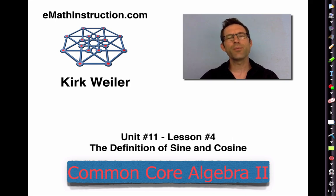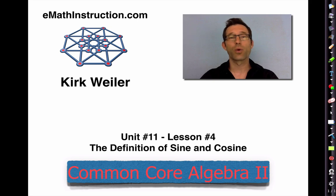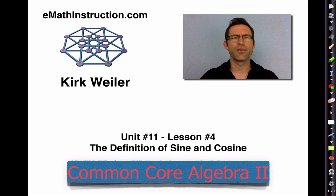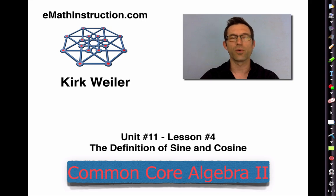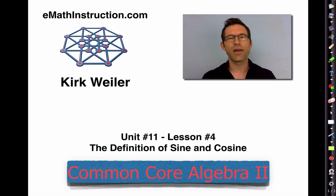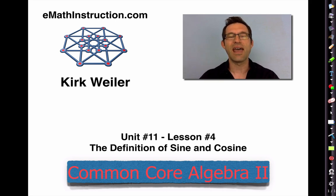You saw the sine, cosine, and tangent trig ratios back in Common Core Geometry, and you did a lot of work with them. Back in Common Core Geometry, the sine, cosine, and tangent ratios were all defined in terms of the acute angles of a right triangle. Now we want to use those definitions, but in this lesson we'd like to extend it so that we can look at the sine and cosine of just about any angle.